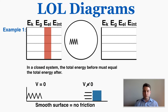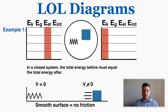No friction means that no heat energy — which we call internal energy here — was created as the box moved along the floor. So because there's no more spring energy, and that caused the box to move, and the box didn't gain any height, all of that energy had to go into the box as kinetic energy specifically. That's what my LOL diagram looks like for this situation: the box started not moving with just elastic potential energy, and after it had only kinetic energy — the energy went from the spring into the box.